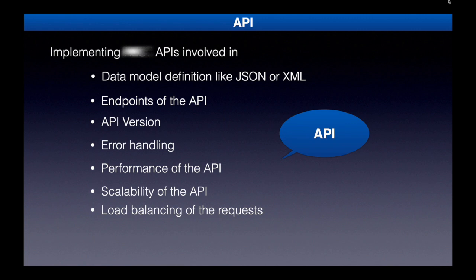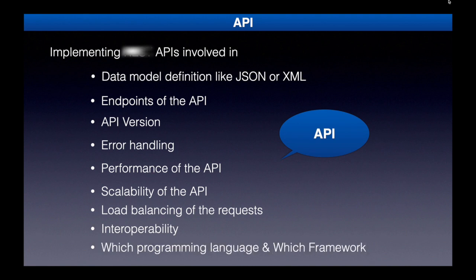All these factors are very difficult to implement, including load balancing requests received by any API. Interoperability is also a challenge — every application may not be implemented using the same programming language. Every application has its own API, so managing communication between them, and choosing which language and framework to use for a specific API, are all very critical considerations.